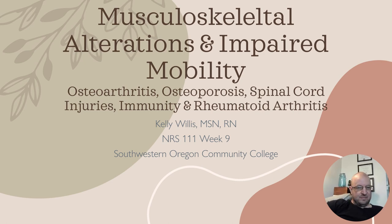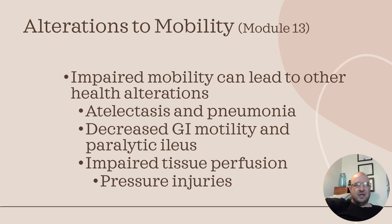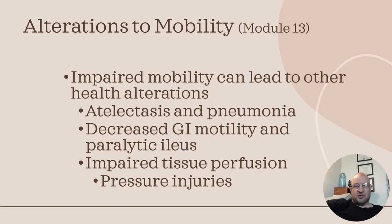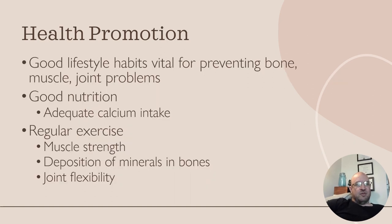We'll start with mobility. Alterations in mobility, Module 13, can lead to other health alterations such as atelectasis and pneumonia, fluid buildup in the lungs, decreased GI motility and paralytic ileus, impaired tissue perfusion, or pressure injuries from not moving around much. Good lifestyle habits are vital to preventing bone, muscle, or joint problems.